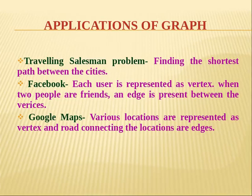What are the general applications of graphs? First is the traveling salesman problem, where a salesman has to travel from one city to another, finding the shortest path that covers all places. Graphs are used to solve this. Second is Facebook — each user of the app is represented as a vertex, and when two people are friends, their connection is an edge. Third is Google Maps — locations are the vertices and the roads connecting them are the edges.